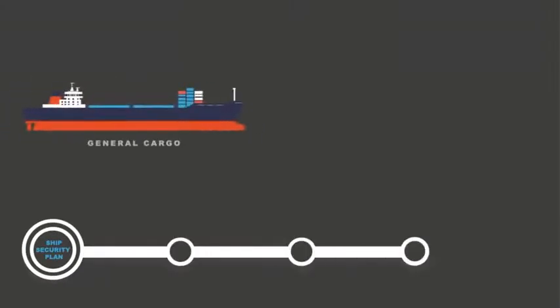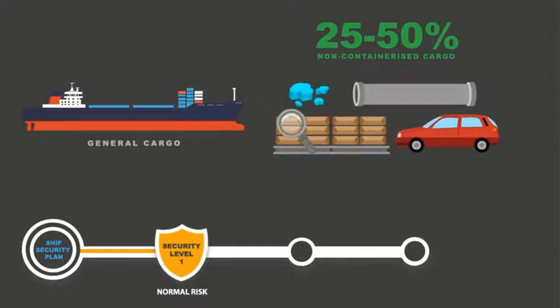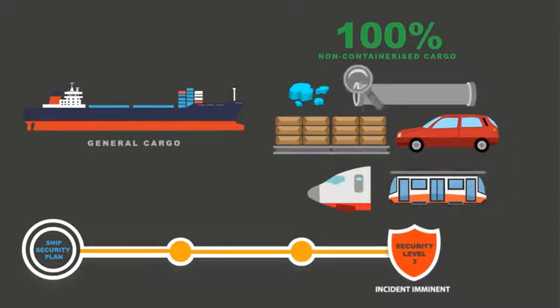When it comes to general cargo ships, you should verify 25-50% of all non-containerized cargo against the cargo manifest at security level 1. This increases to 100% for security level 2 and security level 3.